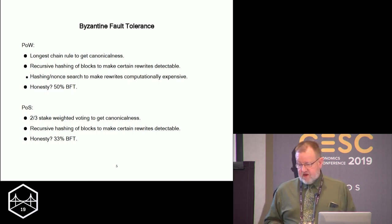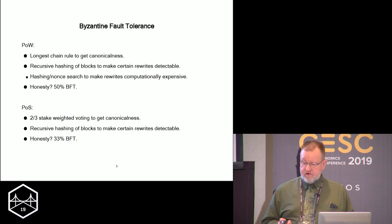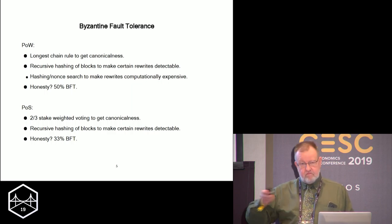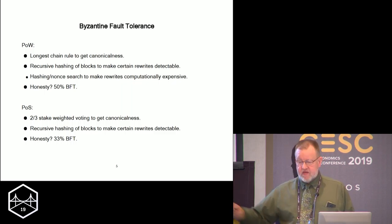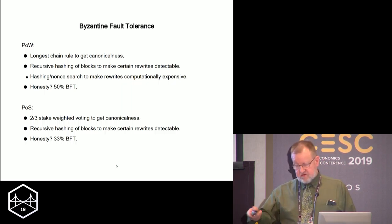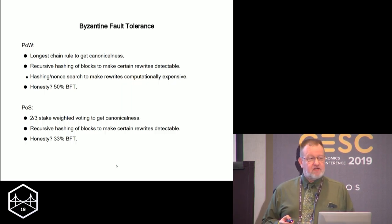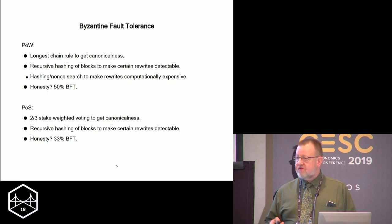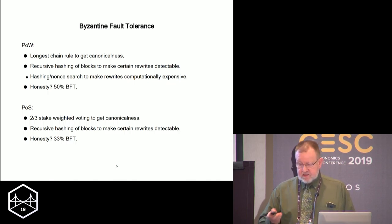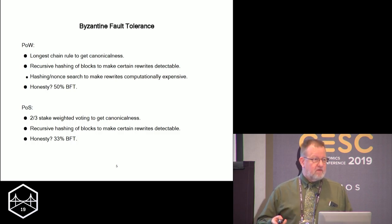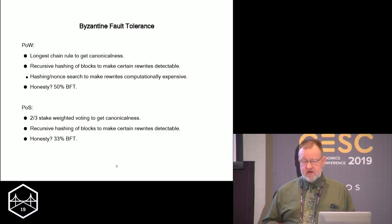Proof of stake, on the other hand, achieves canonical consensus through two-thirds weighted voting majority in many different ways to decide which blocks are correct and how that updates the ledger. They also use recursive hashing to make alterations at least detectable. Honesty is obtainable if you have fewer than one third dishonest nodes.